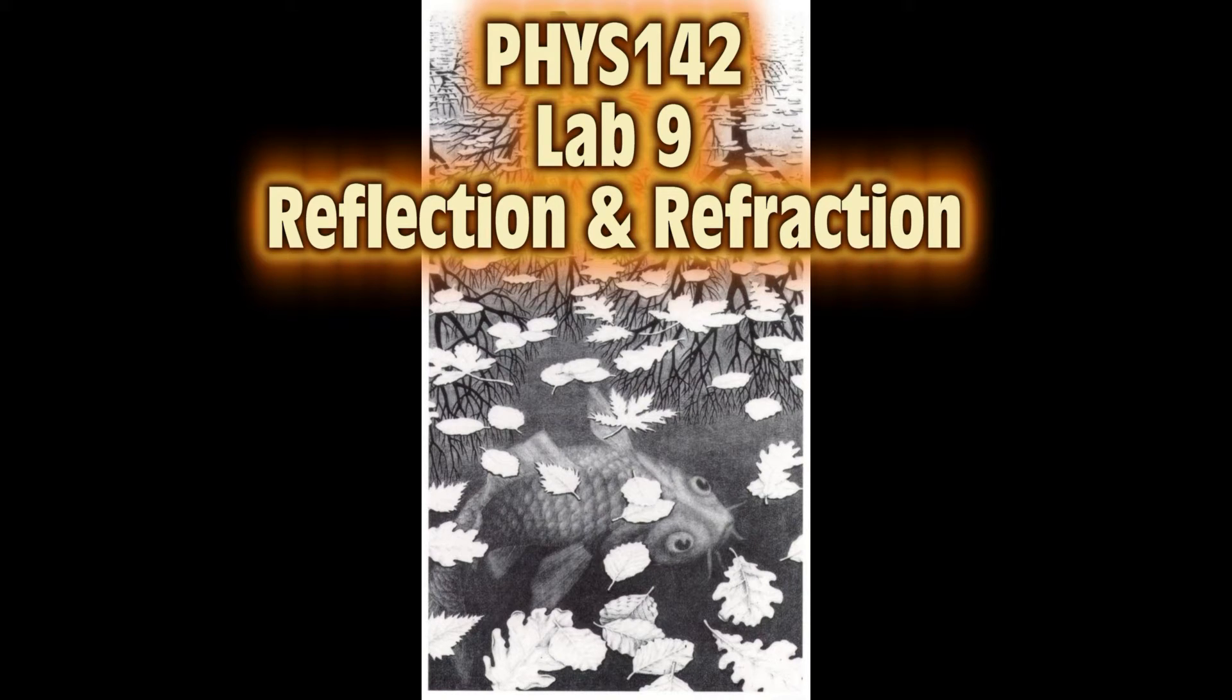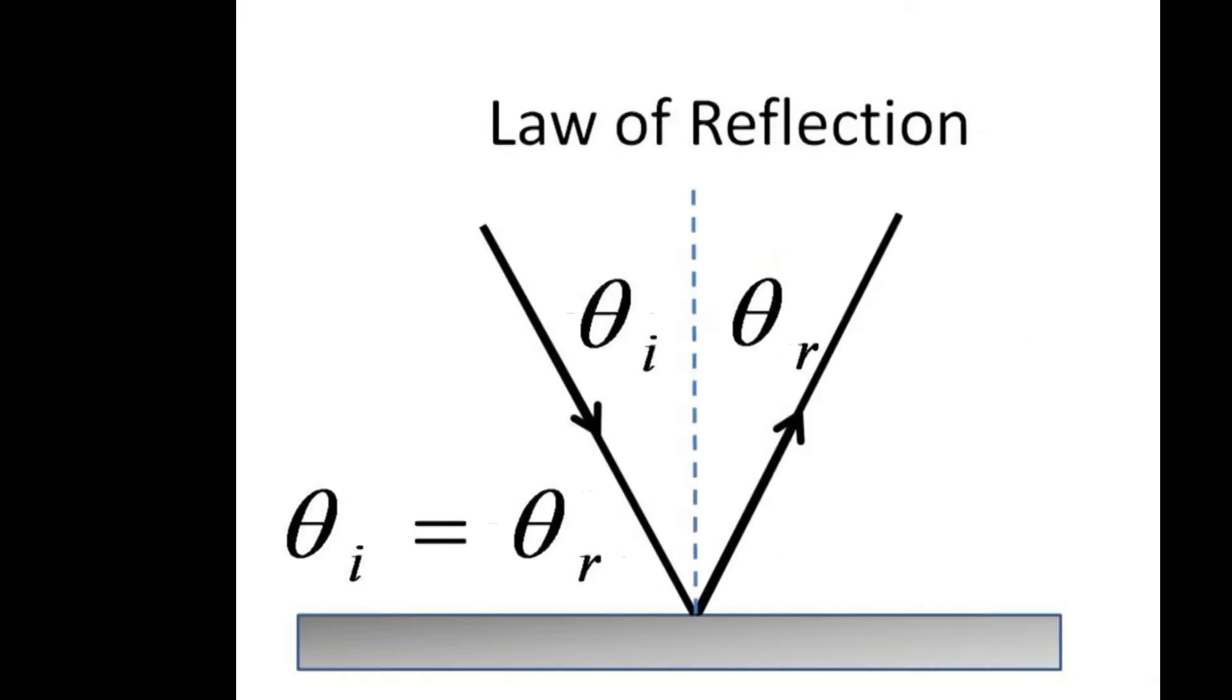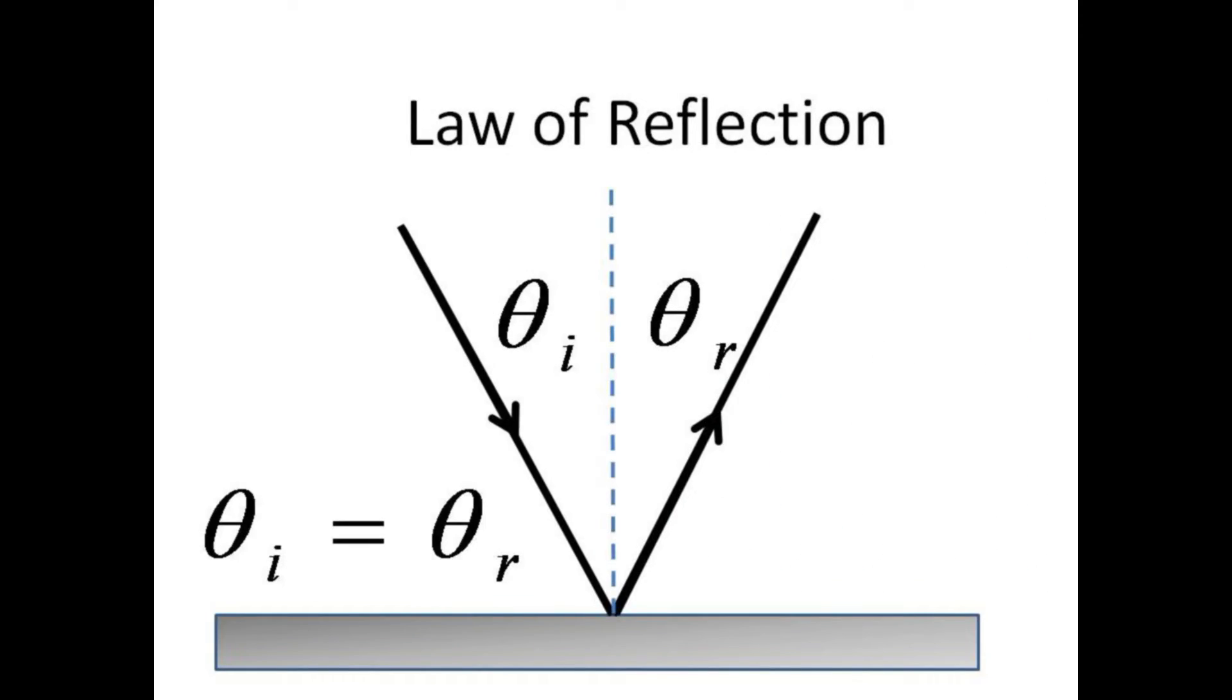When light encounters a boundary between two media, it can either be reflected or transmitted. The law of reflection of light states that the angle of incidence equals the angle of reflection, or theta i equals theta r.